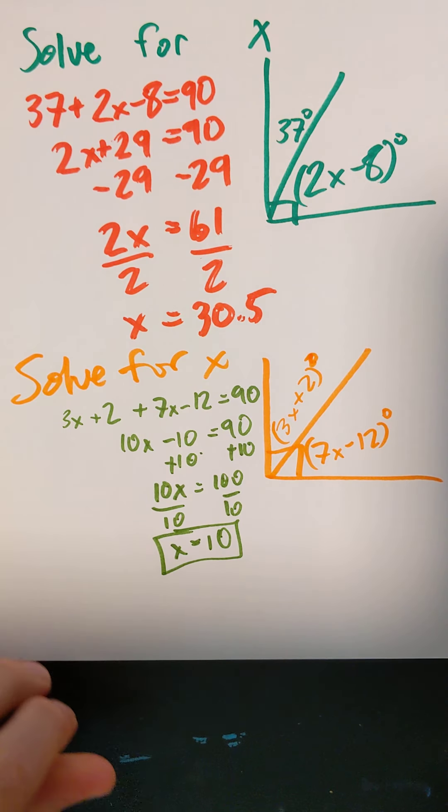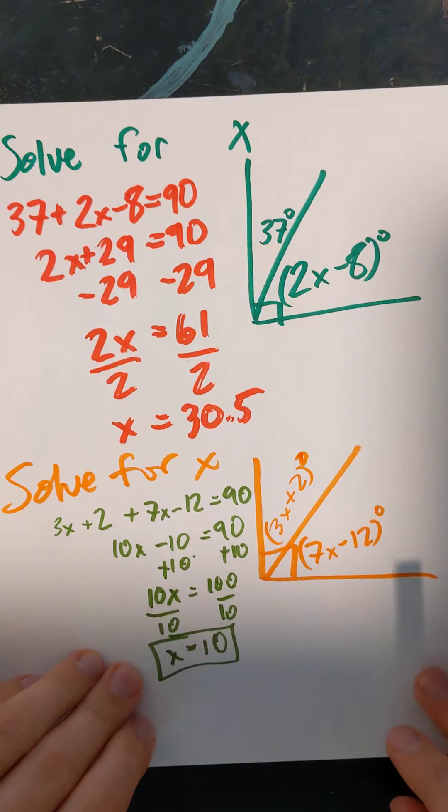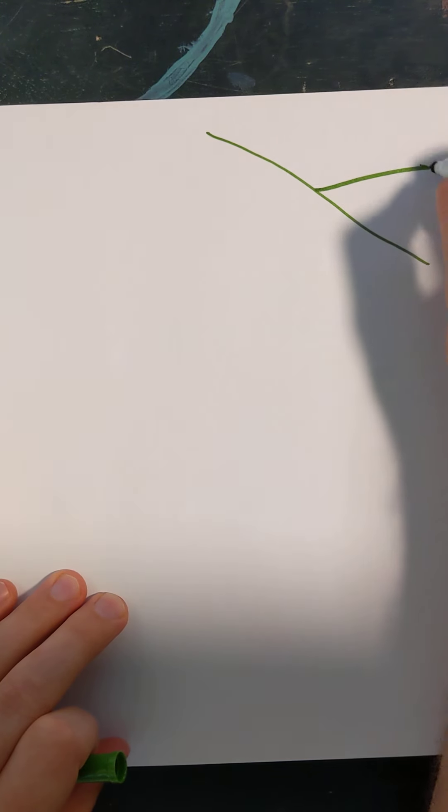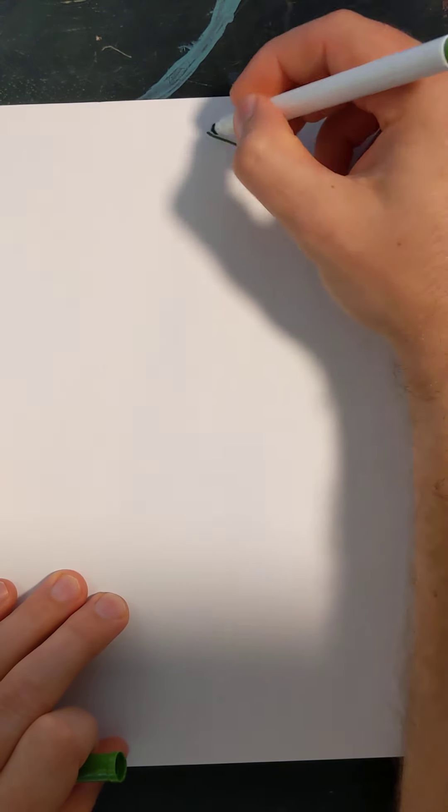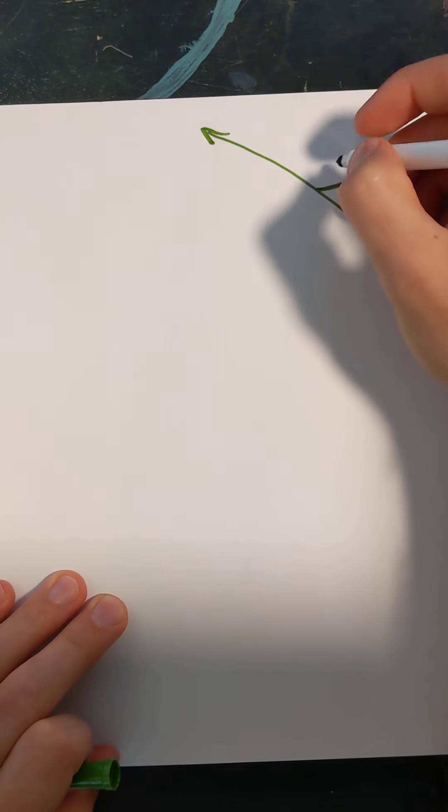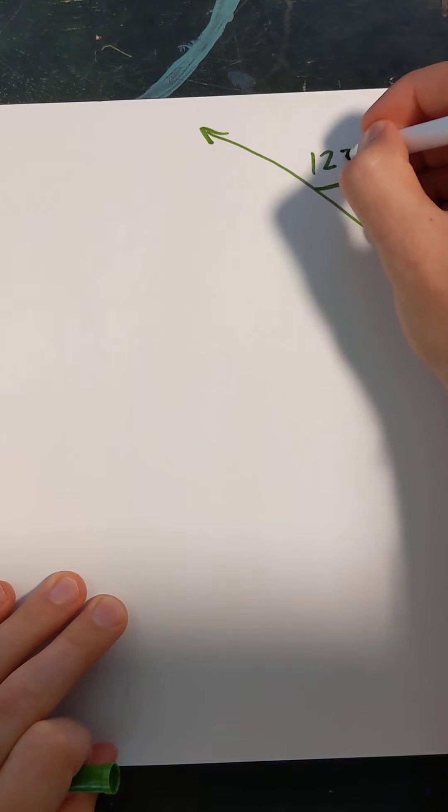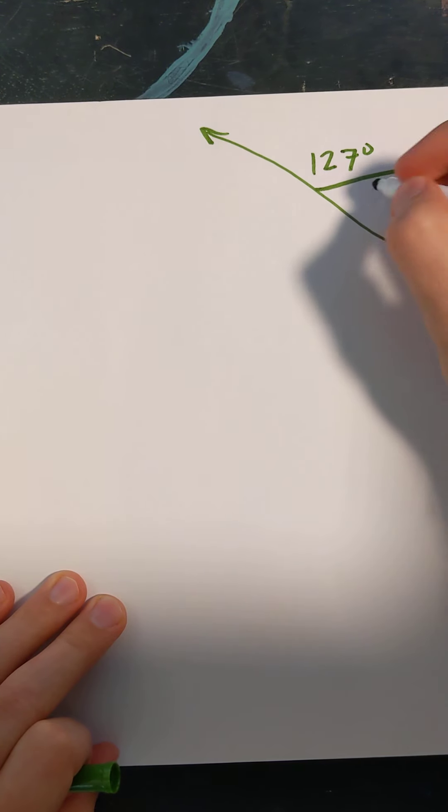There's complementary for you. Let's say we're dealing with a linear pair, or any two angles that come together to form a straight line. And I told you that this was 127 degrees.